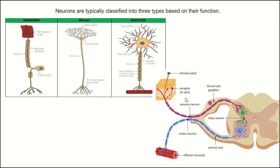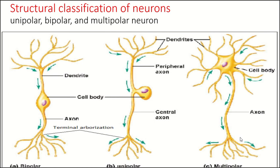The second type are motor neurons. Motor neurons receive signals from the brain and spinal cord to control everything from muscle contractions to glandular output. The motor neuron is connected to the effector organ — here, the muscle. The third type are interneurons. Interneurons connect neurons to other neurons within the same region of the brain or spinal cord. The interneuron shown here is connecting the sensory neuron to the motor neuron.